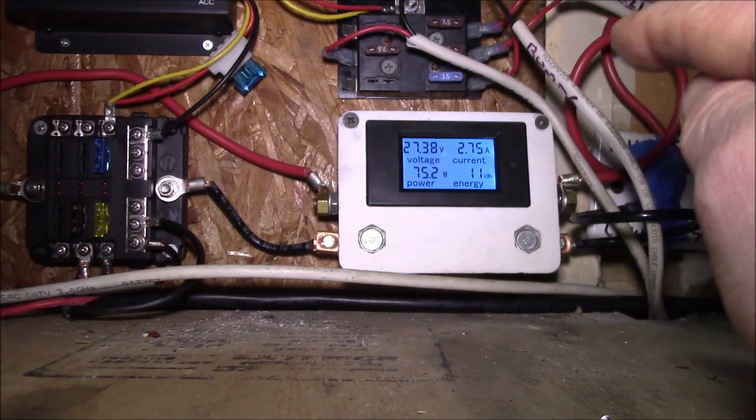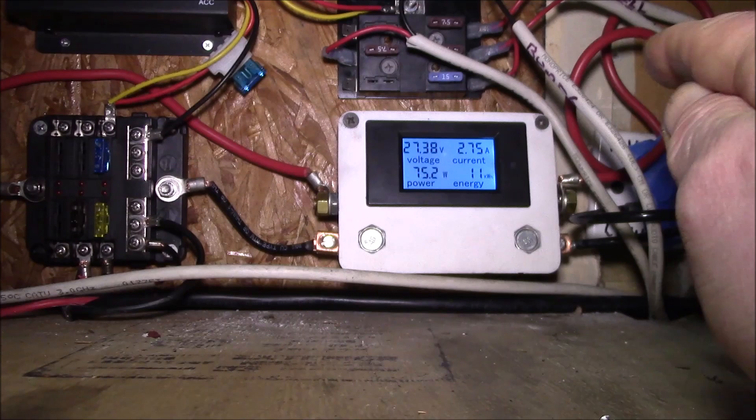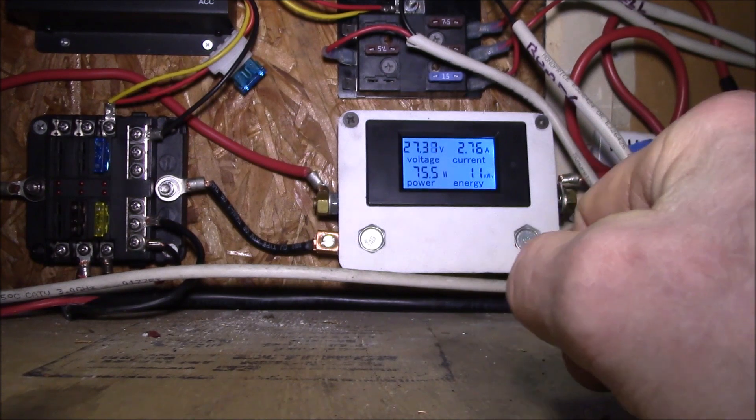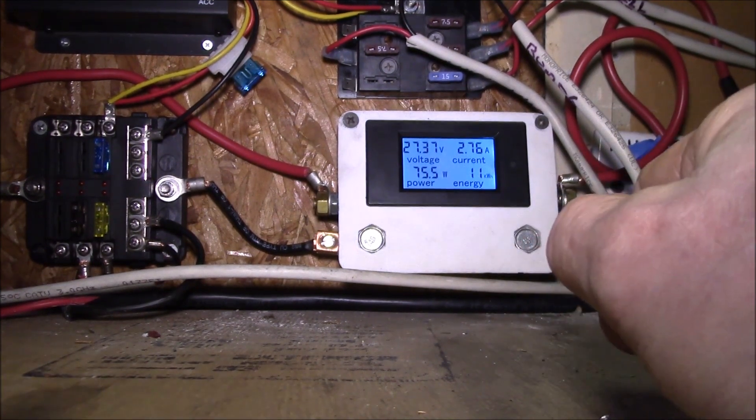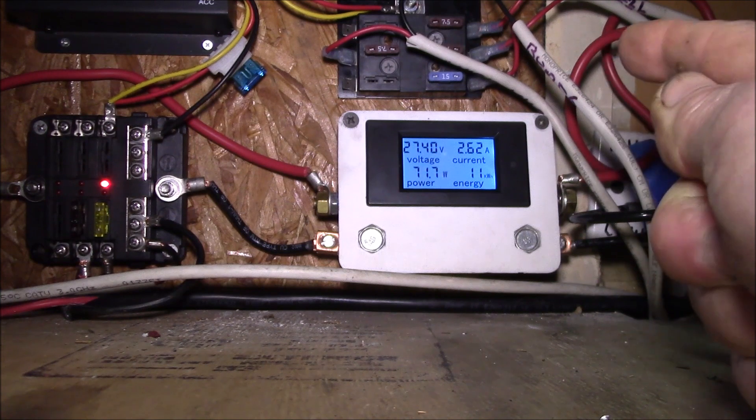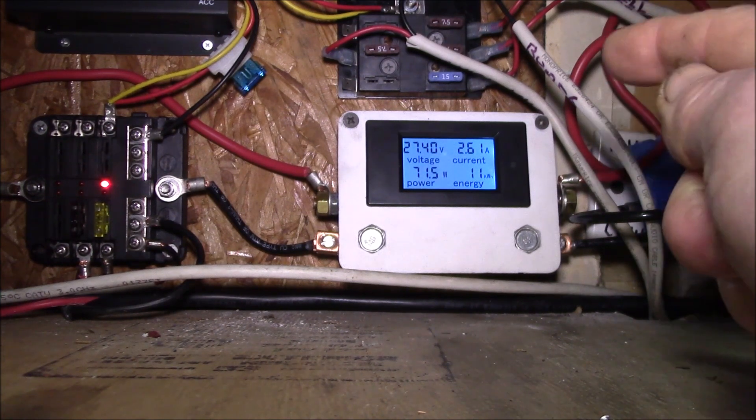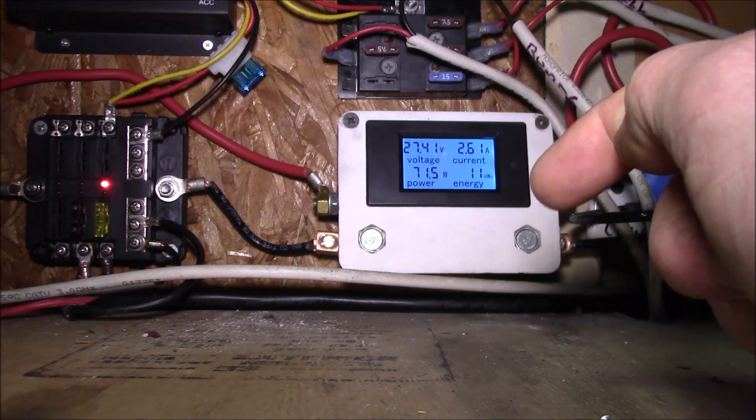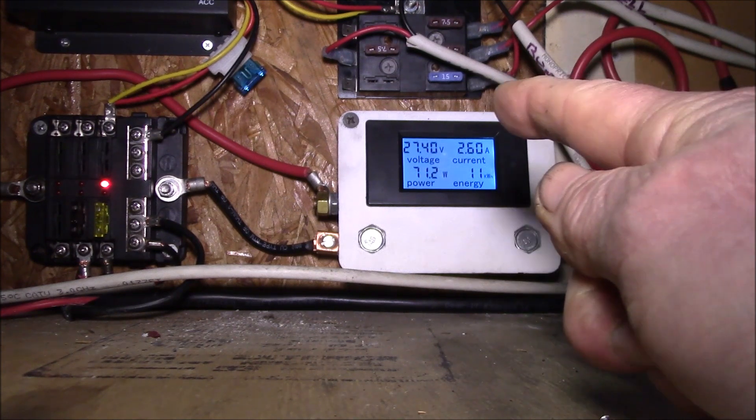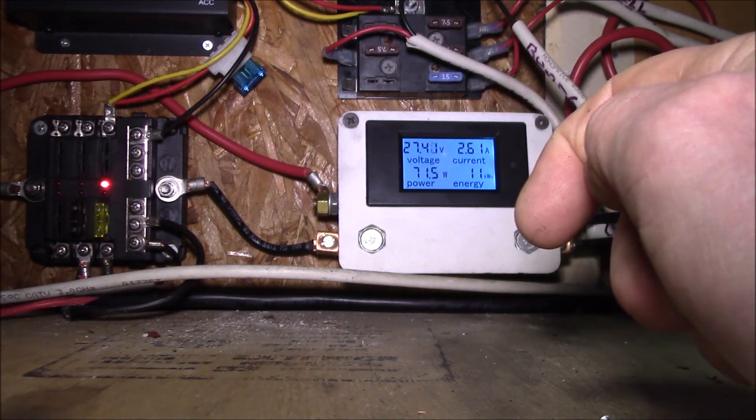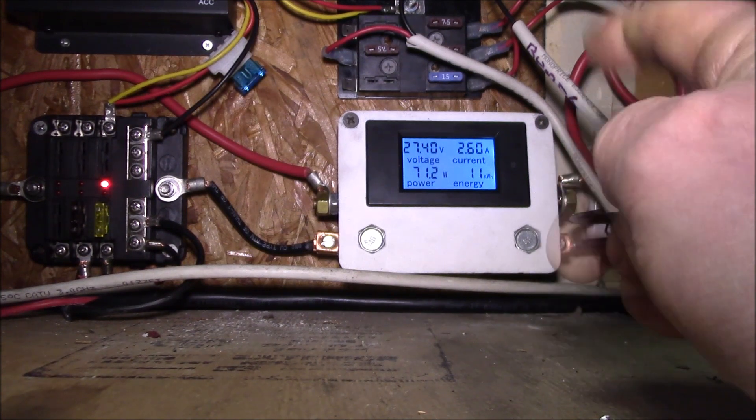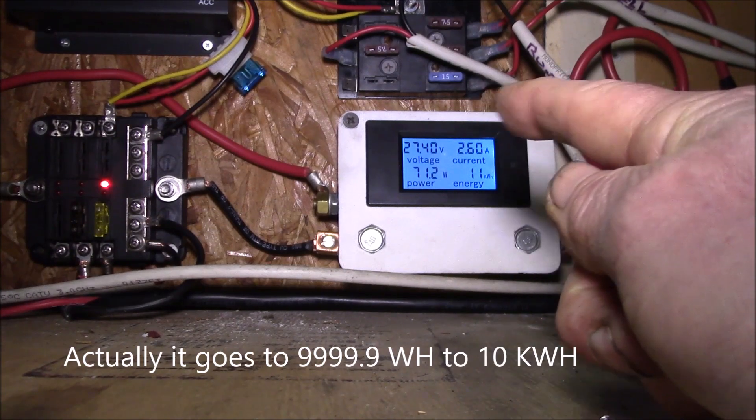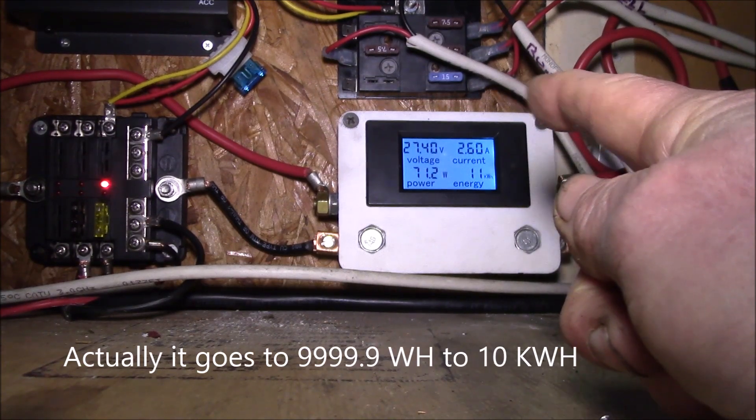Here's the power meter right now. This is with the freezer running, 2.75 amps. I do have my 12 volt buck converter plugged in so let me pull the fuse on that one. Yeah, that's the power the buck converter is using, about 140 milliamps. Right now that's the freezer only, 2.6 amps and 71 watts.